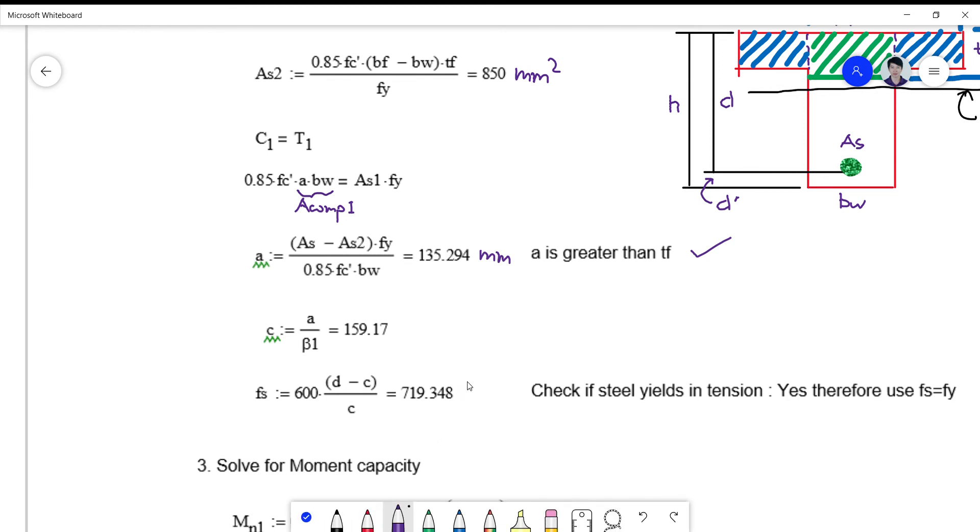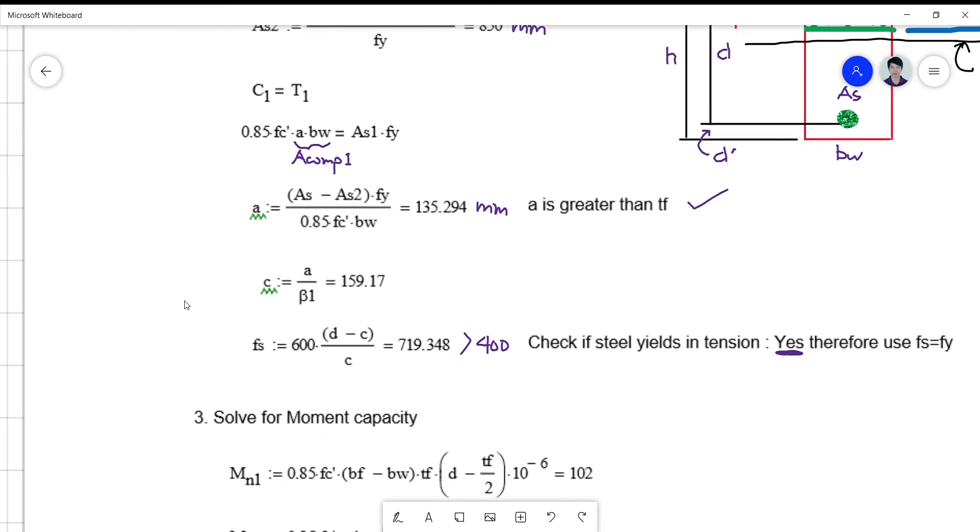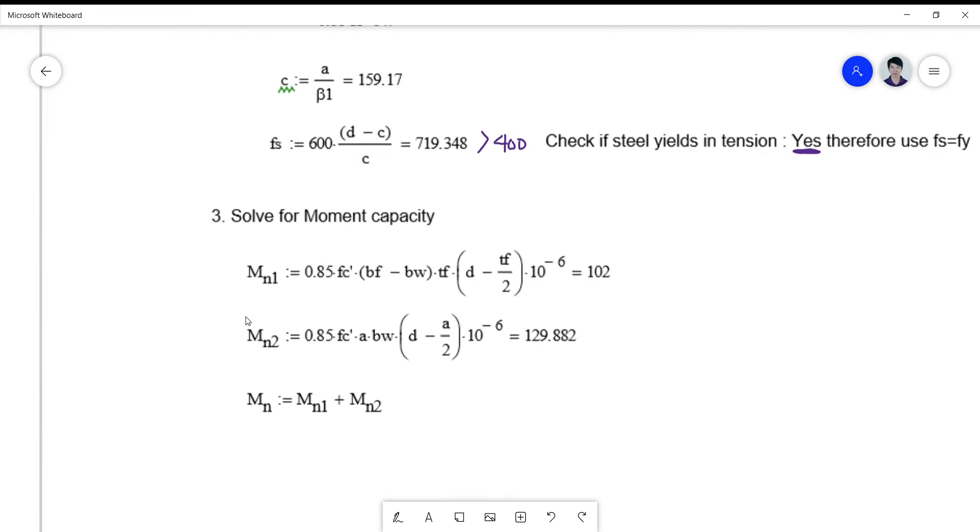So we can solve for C = A over beta 1, so this is 159.17, but we still have to check if steel really yields by the formula 600(d - c) / c. So this is 719.348.